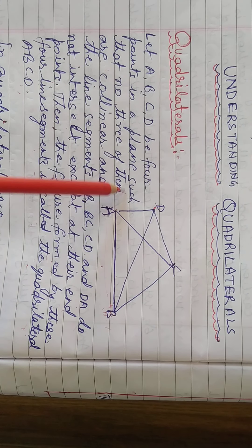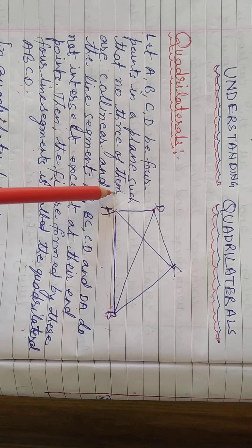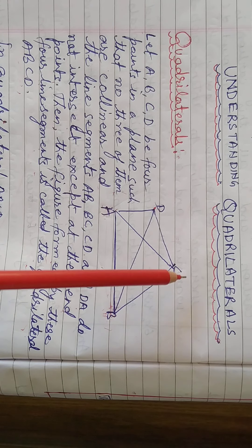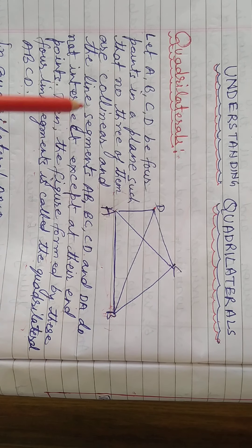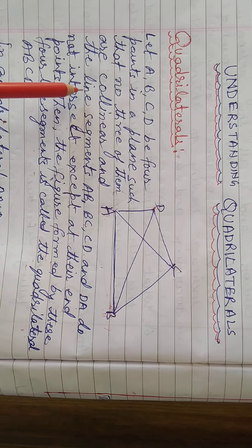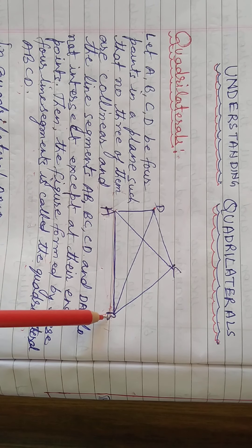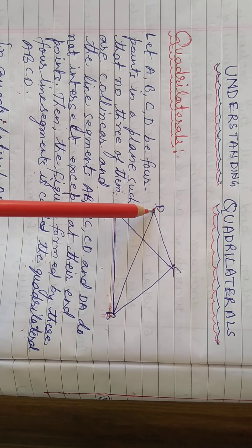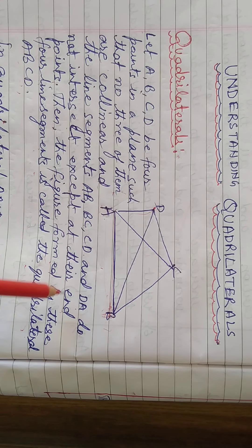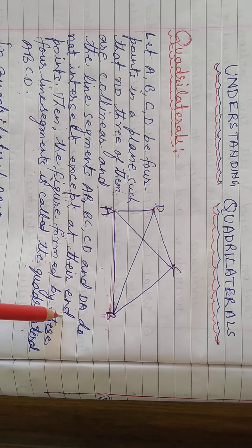Four points in a plane such that no three of them are collinear, and the line segments AB, BC, CD, and DA do not intersect except at their endpoints.